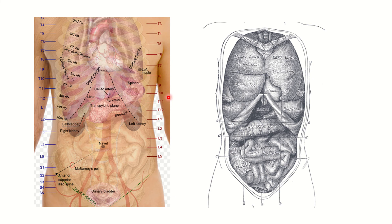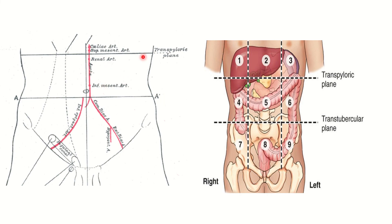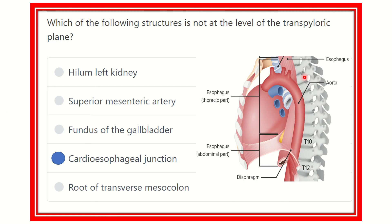In this picture we can see the transpyloric plane — here is the gallbladder and the two kidneys, the pancreas, and stomach. In another picture we can see the transverse colon and the gallbladder. On the left side we can see the transpyloric plane and the abdominal aorta, from which the superior mesenteric artery arises at this transpyloric plane line. The second picture also confirms the transpyloric plane.